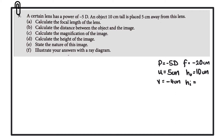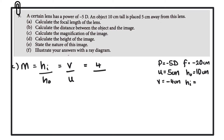Looking at Part C, we want to calculate the magnification of the image. The magnification is given by the height of the image divided by the height of the object, but looking at the information we have at the minute, we can't use that equation yet. However, the magnification is also the same as V over U, and we do have that information. So the image distance is 4 centimeters. We can ignore the minus here when looking at magnification. We have 4 centimeters divided by the object distance of 5. 4 over 5 gives us 0.8, so the linear magnification is 0.8. Since this is less than 1, that means our image is smaller than the object.